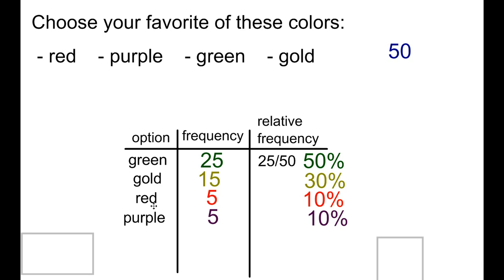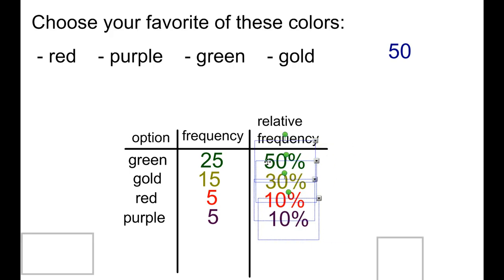A frequency table is just having your options and your frequency. And then, in certain cases, you'll be asked to include the relative frequency. That's where you include that percentage by dividing. And that will typically come out as a decimal or a percent.